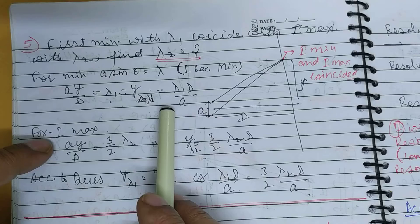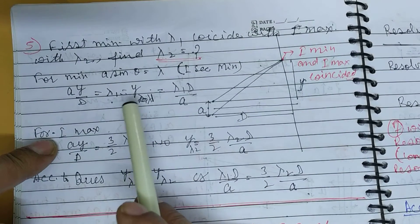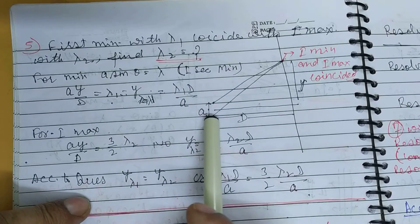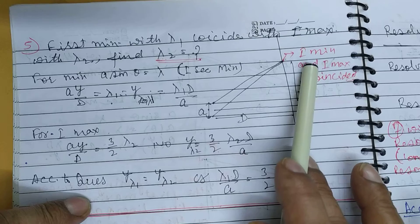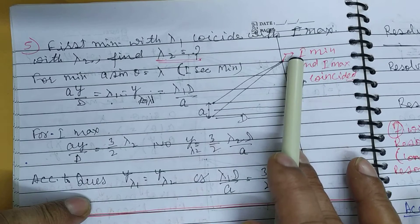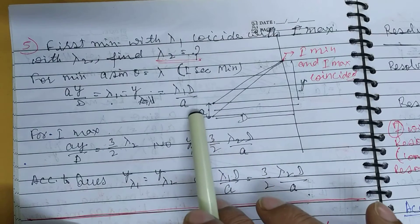And when you use another wavelength of lambda 2, then at that point you have first secondary maximum. So you have to find lambda 2 given the conditions.